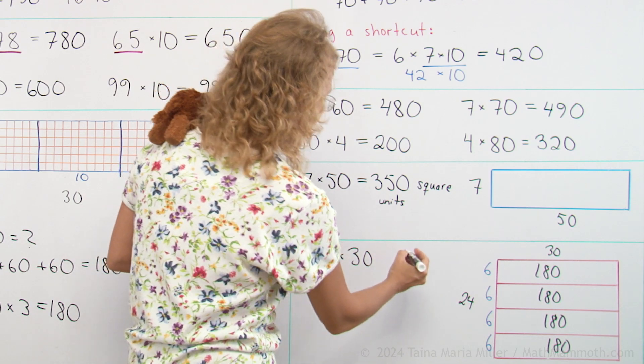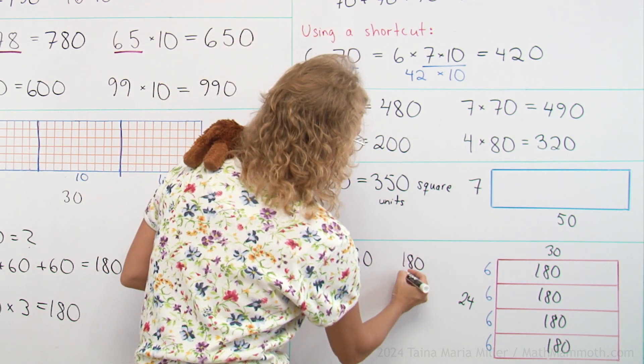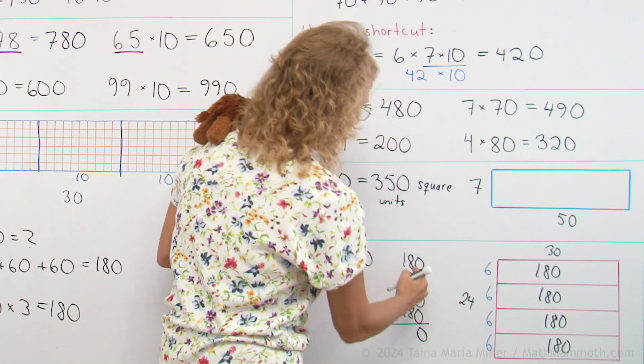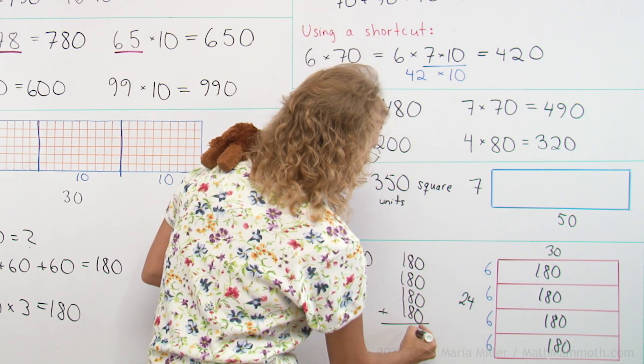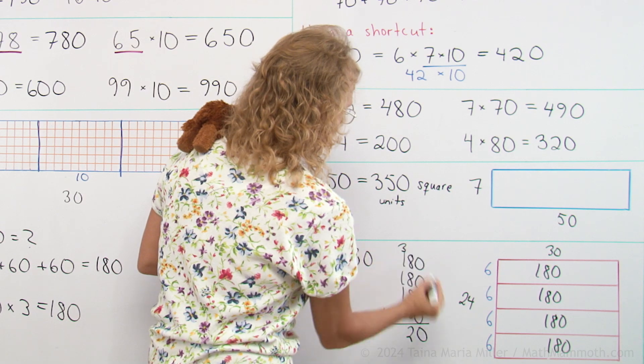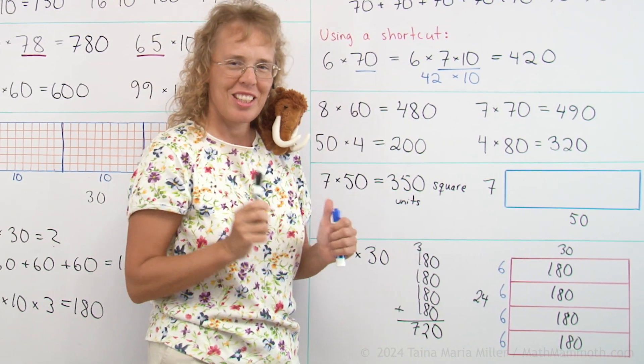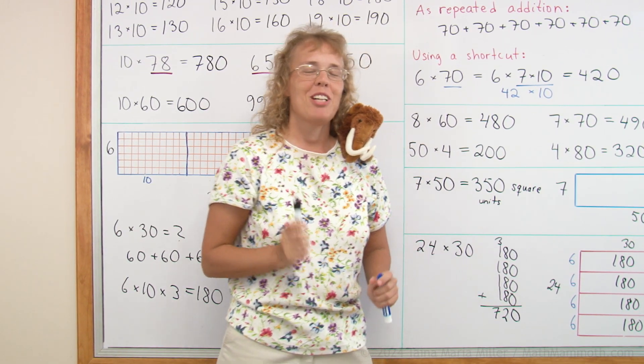And so now I can just add 180. All of these. And I get 0 here. 4 times 8 would be 32. And then here. So the answer is 720. Did you get the same? I hope so. We're all done with this lesson.